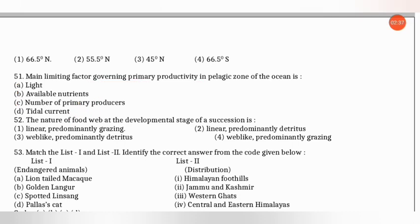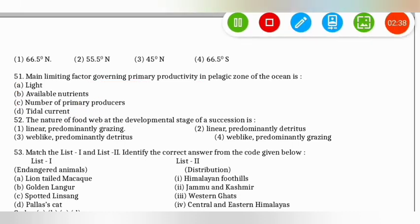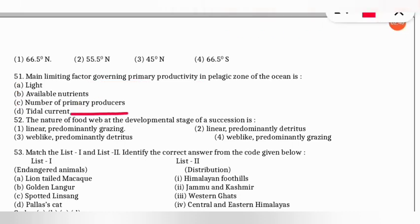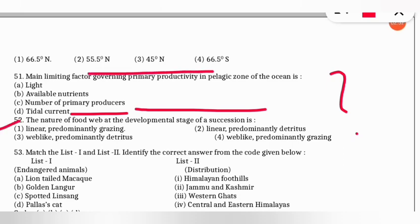The next question: the nature of the food web at the developmental stage of succession is what? The correct option is option 1 — the food web is linear in nature and predominantly grazing, as seen in the developmental stage of succession.